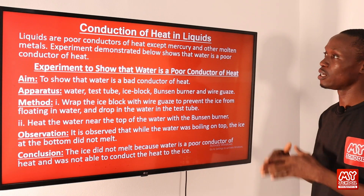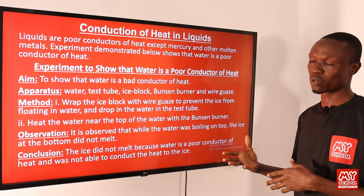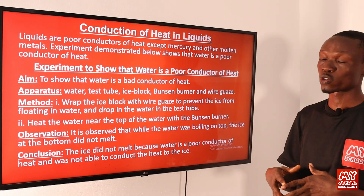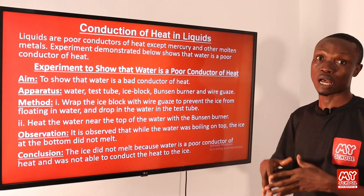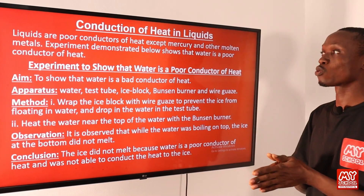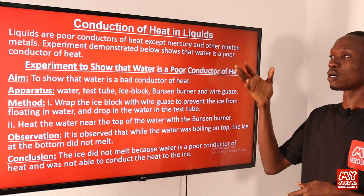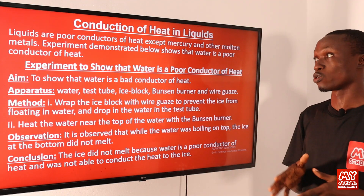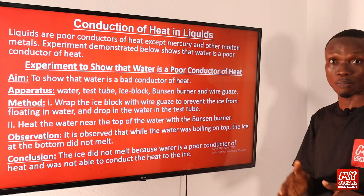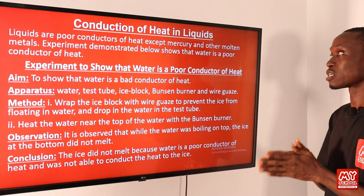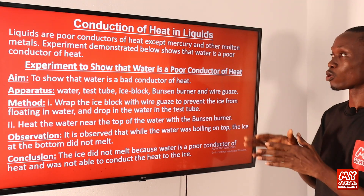Conduction of heat in liquids: liquids are poor conductors of heat. Poor conductors of heat are also referred to as insulators — materials that do not allow heat and electricity to pass through them easily. However, not all liquids are poor conductors; for example, mercury is a metal that is liquid at room temperature, so it is not a poor conductor of heat.